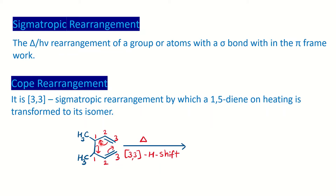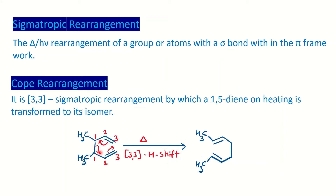You can see the rearrangement taking place with the arrow marks. Basically the pi bond is going to rearrange with the formation of a new sigma bond. In the product you are having a sigma bond at the 3-3 position followed by the pi bond rearrangement. This is called cope rearrangement.